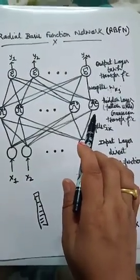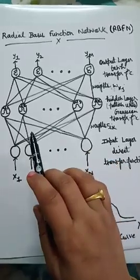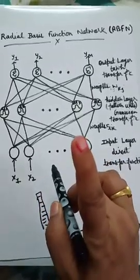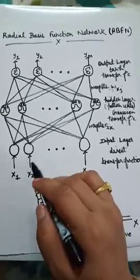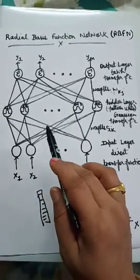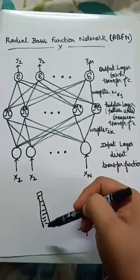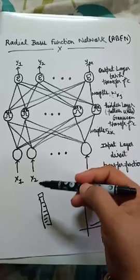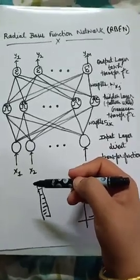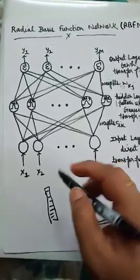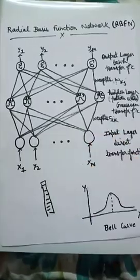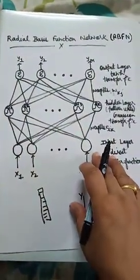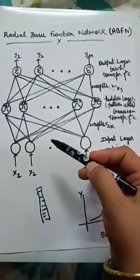The second layer is the RBF neurons, that means the hidden layer. Each RBF neuron stores a prototype vector, which is just one of the vectors from the training set. Each RBF neuron compares the input vector to its prototype and outputs a value between zero and one, which is a measure of similarity.